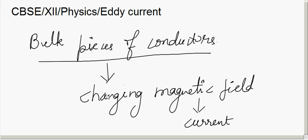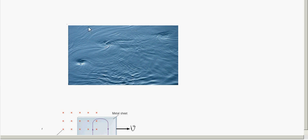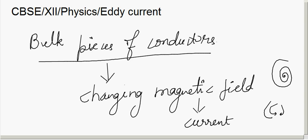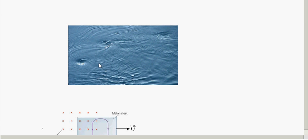That current is called an eddy current. We call it an eddy current because the pattern of these currents resembles the swirling eddies in water. You may have observed this when you throw a stone into a pond — there is a swirling pattern. You can also observe it when water flows past an obstacle, creating a reverse current. That is what we call eddies in water, and so these currents in bulk pieces of conductors are called eddy currents.